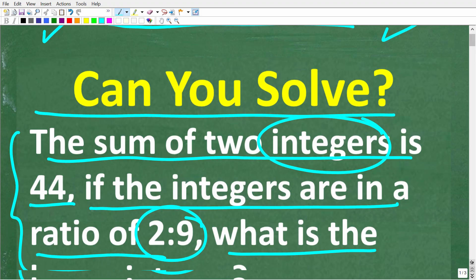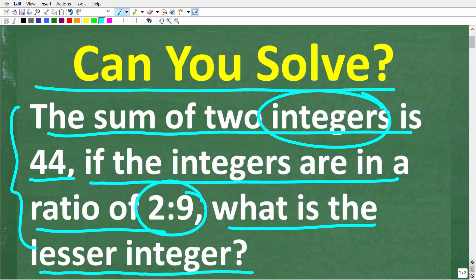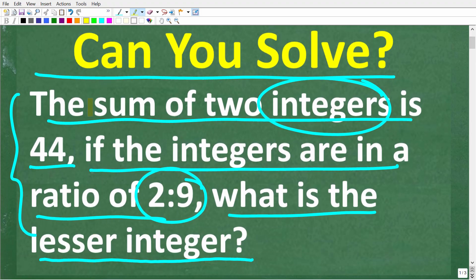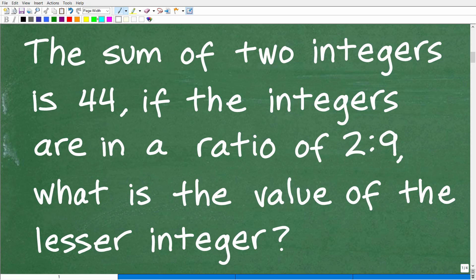All right. So you have to keep this concept of what an integer is in this problem. But once again, the sum of two integers, we're not talking about decimals or fractions here. The sum of two integers is 44. If the integers are in a ratio of 2 to 9, what is the value of the lesser integer? Okay. So first things first.